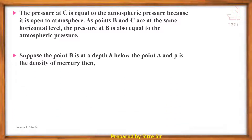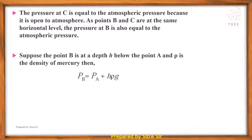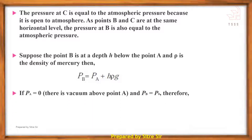Suppose point B is at depth H below point A, and rho is the density of mercury. Then the pressure at B equals the pressure at A plus H·rho·g. Therefore, atmospheric pressure P_A equals H·rho·g. This is the pressure-measuring formula.